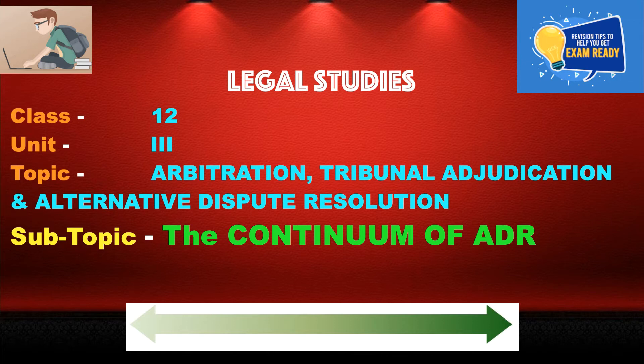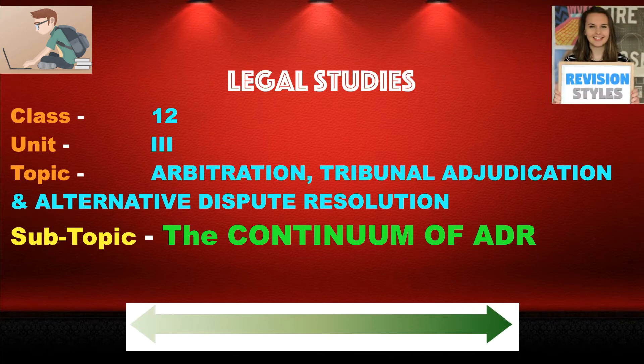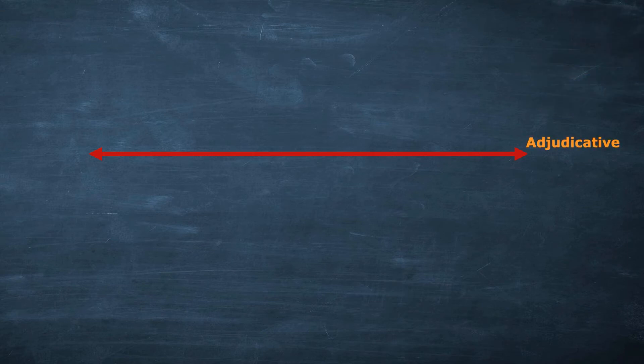The continuum will decide the properties of all these methods — litigation, arbitration, mediation, and conciliation — and will also give you a clear distinction among all four terms. After watching this video you won't have any confusion regarding any of these methods of dispute resolution. Let's first see the first continuum: adjudicative and consensual.